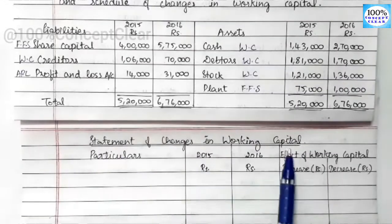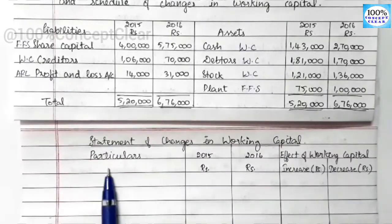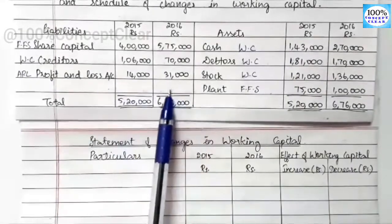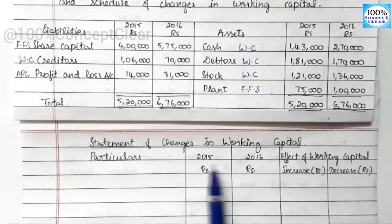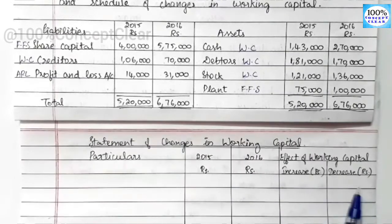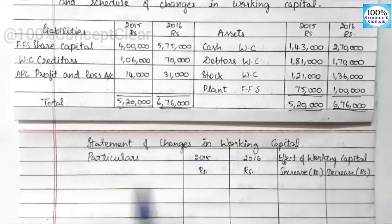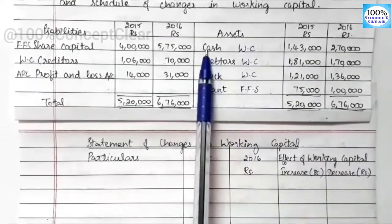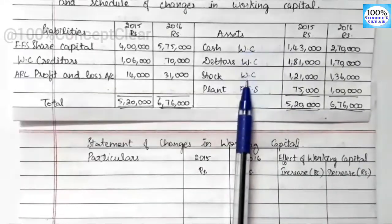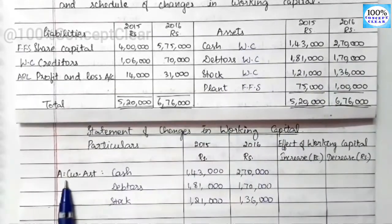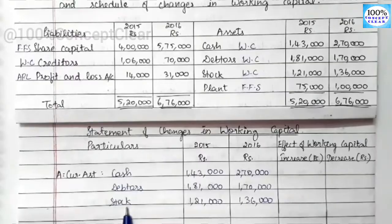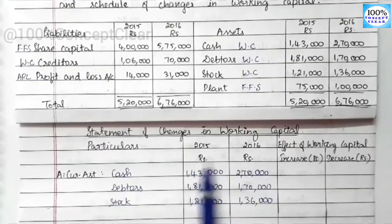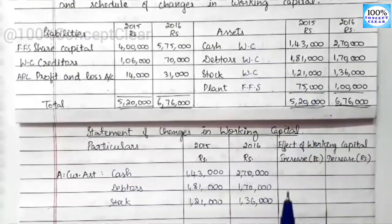Let's look at the format for the statement of changes in working capital. The columns are: Particular, 2015, 2016, and Effect on Working Capital — that is, whether working capital increases or decreases. First, in working capital, we have current assets: cash, debtors, and stock — three items with their amounts for each year. If there is an increase from 2015 to 2016, we note it in the increase column.